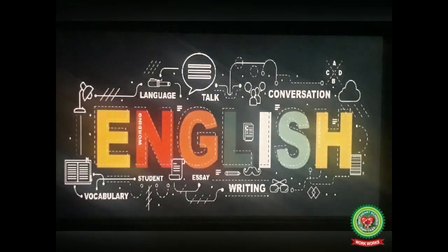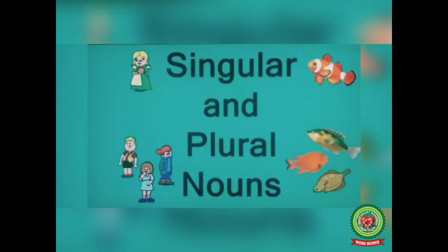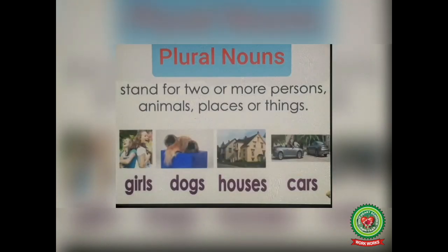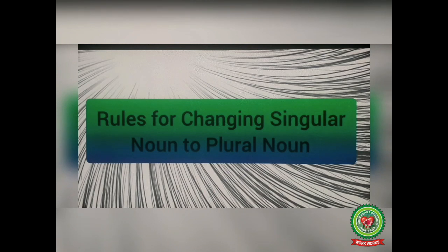Good morning children, welcome to the English class. In the last video I discussed the meaning of noun and its kinds. The main objective of this class is to teach you the meaning of singular and plural nouns and the rules to change singular nouns to plural nouns. Singular nouns stand for one person, animal, place or thing — for example, boy, cat, school, tree. Whereas plural nouns stand for two or more persons, animals, places or things — for example, girls, dogs, houses, cars.